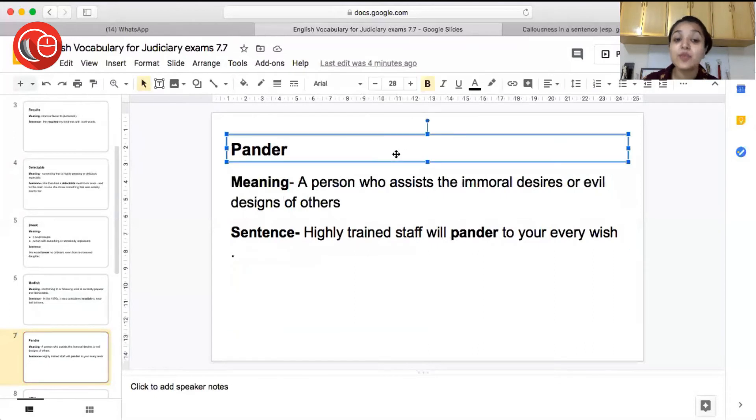The next word is pander, meaning a person who assists the immoral desires or evil designs of others. So a person who fulfills the immoral or evil desires of other person, that is called pander. Sentence: Highly trained staff will pander to your every whim. So the staff which is highly trained will fulfill, will assist all your immoral desires or evil desires.